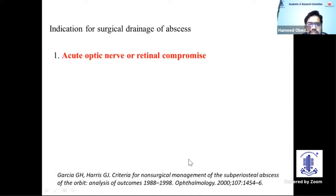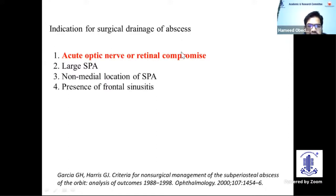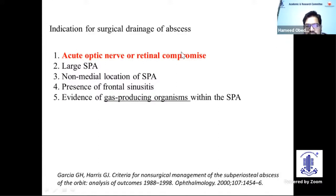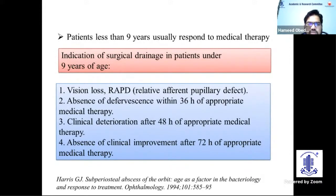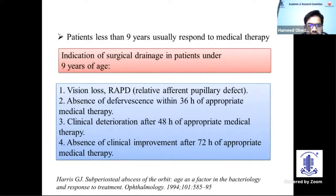Indications for surgical drainage: immediate surgical drainage is required for acute optic nerve or retinal compromise. In other cases — large superior abscess, non-medial location of abscess, presence of frontal sinusitis (risk of frontal lobe abscess), evidence of gas-producing organisms, infection of dental origin, and patients older than 9 years also require drainage. In children under 9 years, drainage indications include vision loss, RAPD, absence of fever reduction within 36 hours, clinical deterioration after 48 hours, or absence of clinical improvement after 72 hours of appropriate medical therapy.